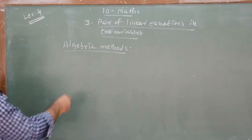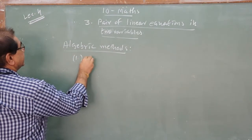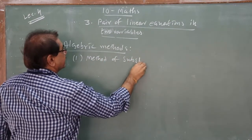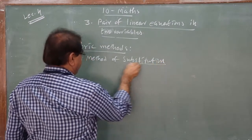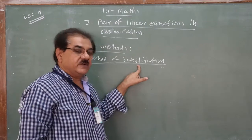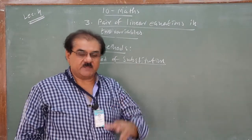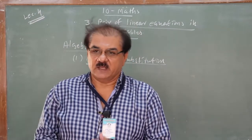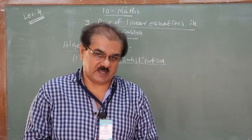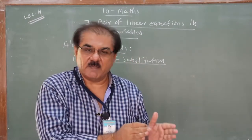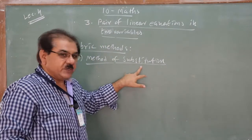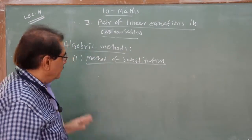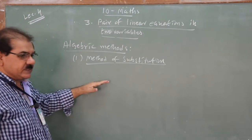The method we are learning today is the Method of Substitution. Just understand the word 'substitution': in cricket, a substitute plays for another player — similarly here, one variable is substituted by an expression in the other. So what are the general steps for solving by this method?